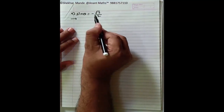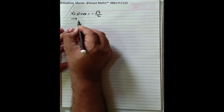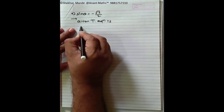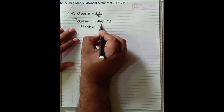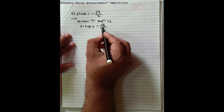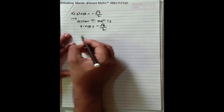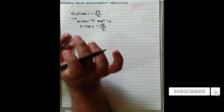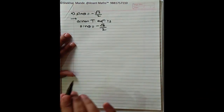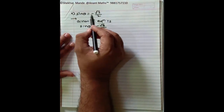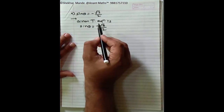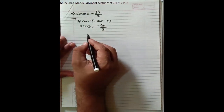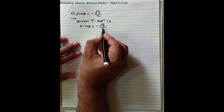We will consider another type of example: sin θ = −√3/2. The given trigonometric equation is sin θ = −√3/2. What is different in this example? The right side is negative. We need to handle the negative sign carefully. We know sin(π/3) = √3/2, but here we have a minus sign. We want to express −√3/2 as sin of some angle.